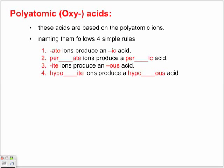And the last rule, hypo-ite ion produces a hypo-us acid. And so the hypo and the I-T-E tells us that we've lost an oxygen, but the hypo means that we've lost two. We've lost two oxygens from the original polyatomic.